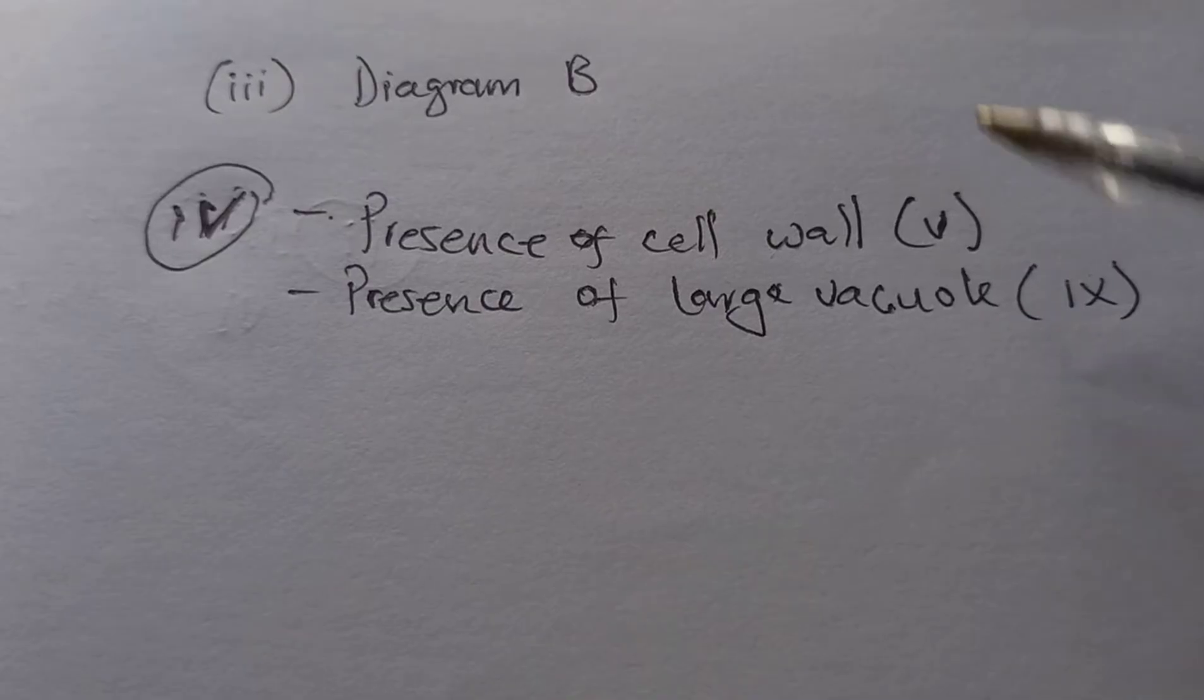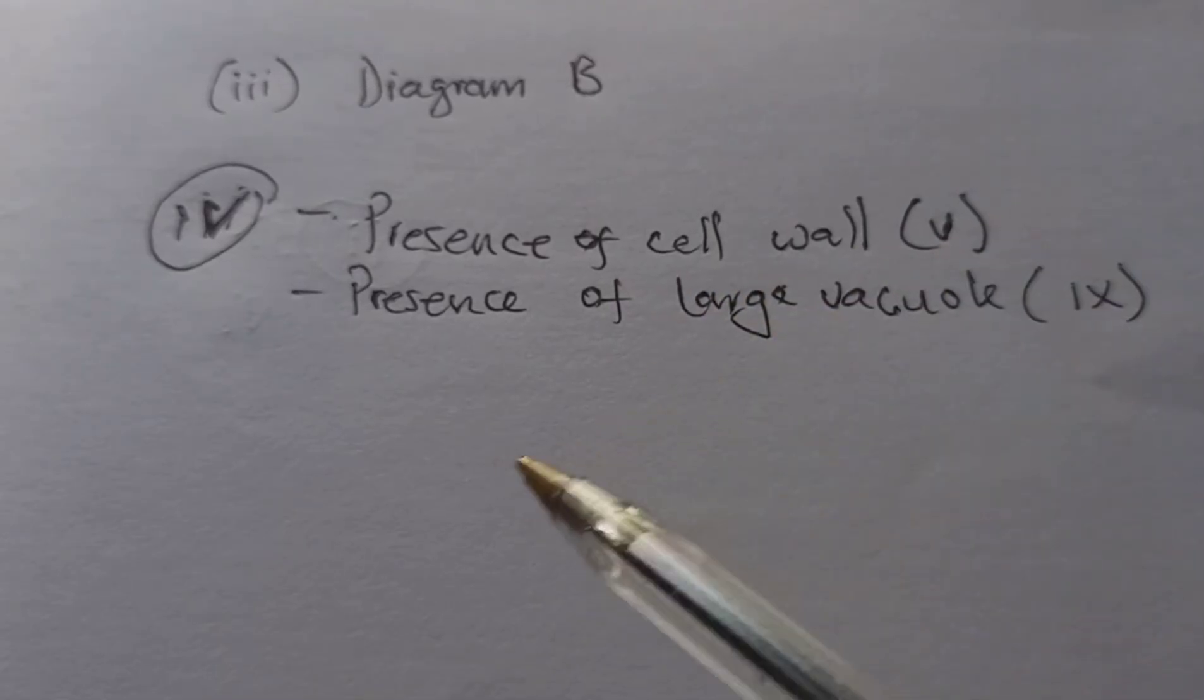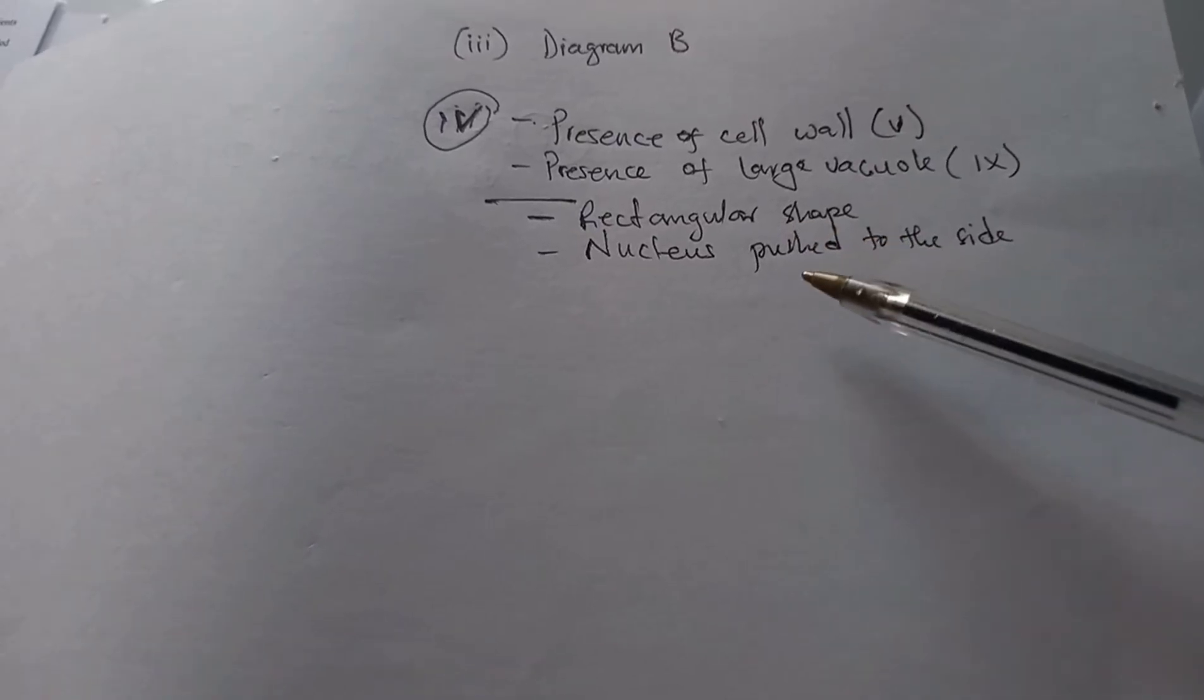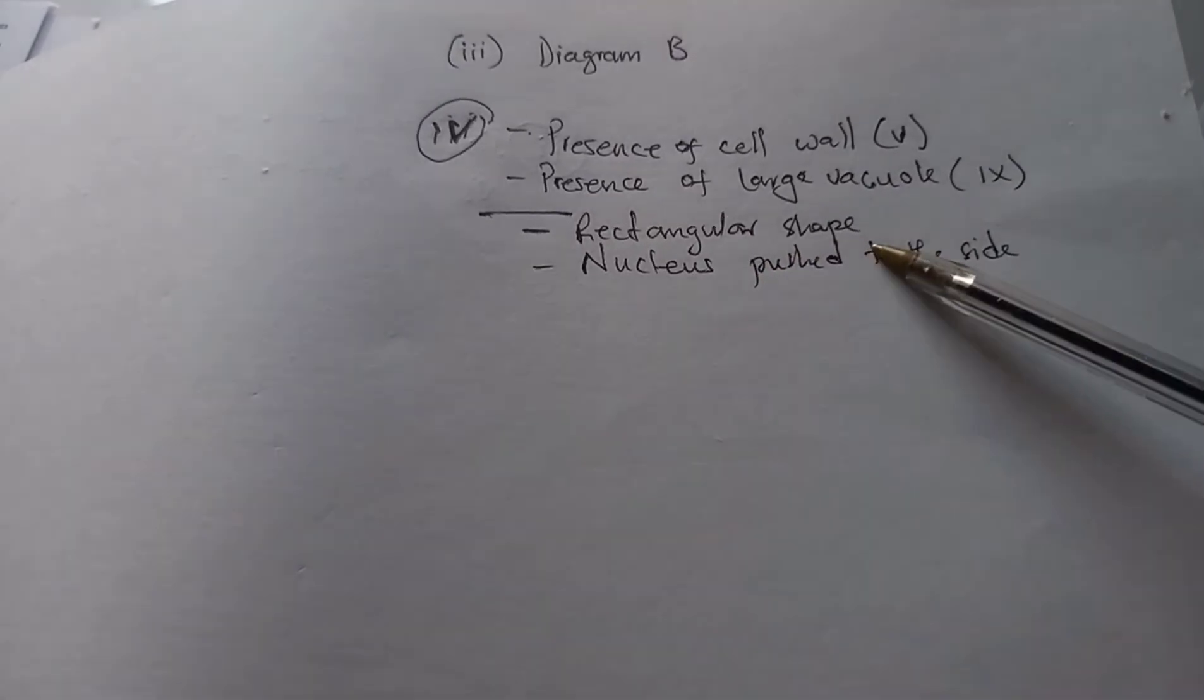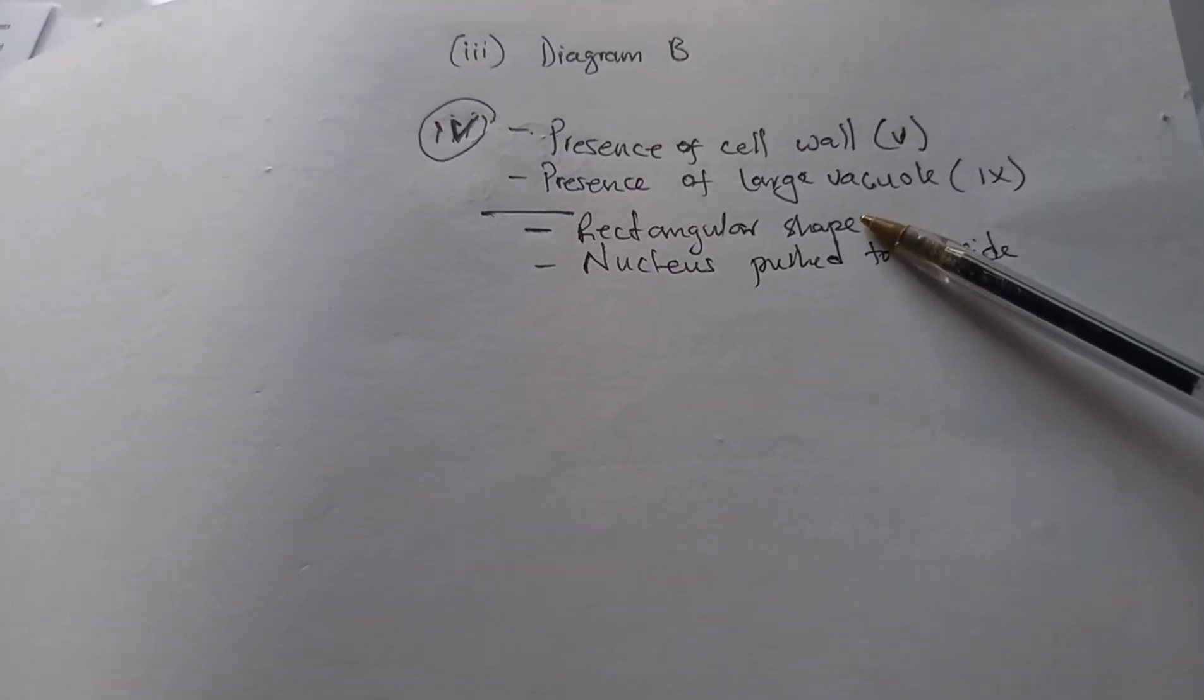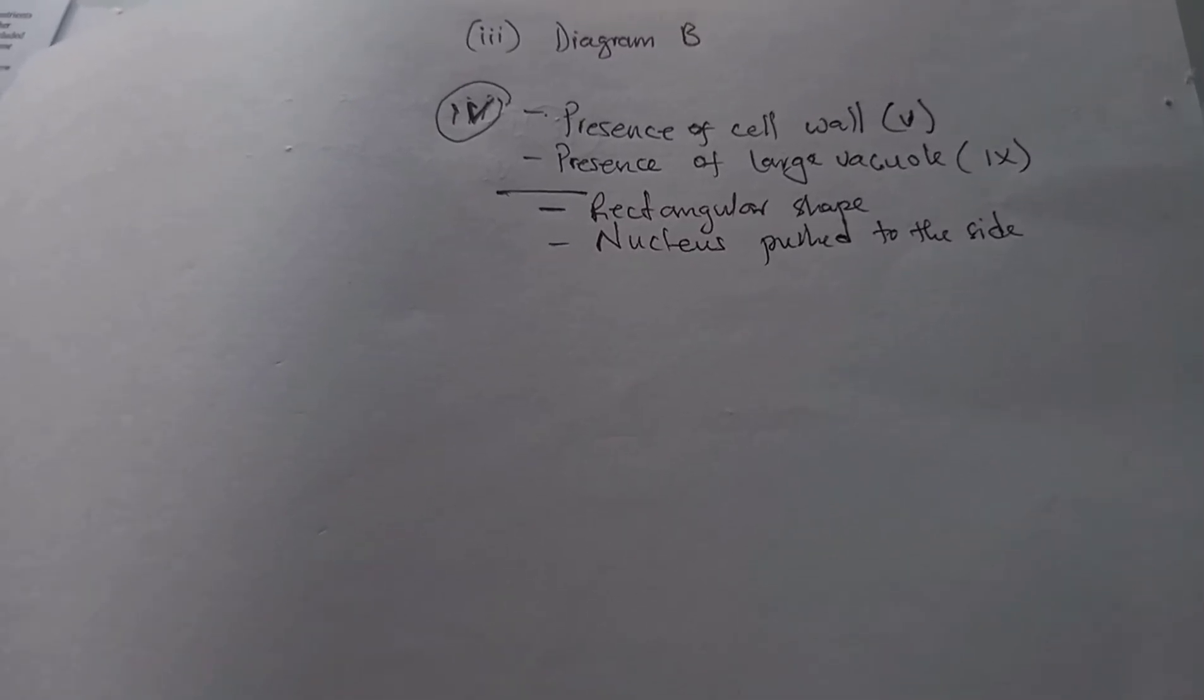Here is your answer for 1a(iii): diagram B is a plant cell. And concerning your two reasons, the presence of a cell wall, which is V, and the presence of a large vacuole, which is labeled. You could also say the rectangular shape or that the nucleus is pushed to the side. If they ask you to give more than two, then you add these ones.